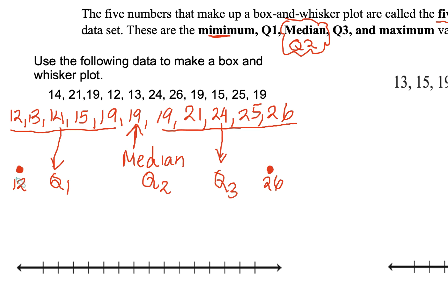So we have our minimum, Q1, Q2, Q3, and maximum value. They're going to give you a number line. Here on this number line, we're just going to start from 12. So 12 is the minimum, 14 is important, 19 is important, 26 is the maximum, and 24 is Q3.